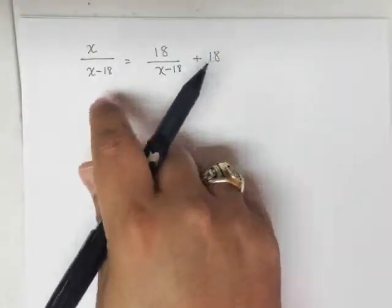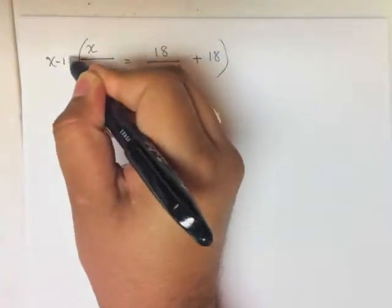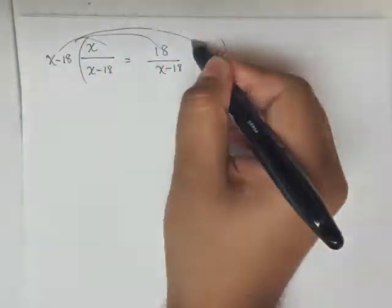All right, so let's see. We want to clear the fractions by multiplying everything by x minus 18, and we can distribute across the board.